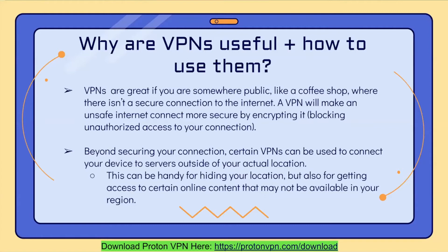This simply means that it will block unauthorized access to your connection and prevent people from being able to see your information. Beyond securing your connection, certain VPNs can also be used to connect your device to servers outside of your actual location. This can be handy for hiding your location, but also for getting access to certain online content that you might not be able to get in your region — for example, American Netflix while you're in Canada.